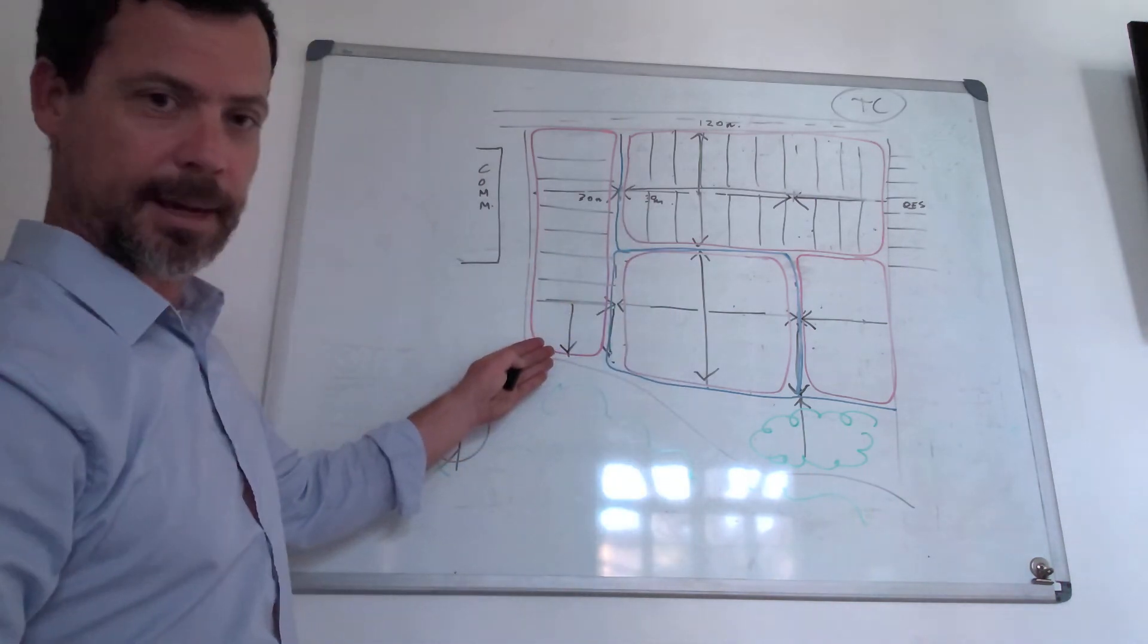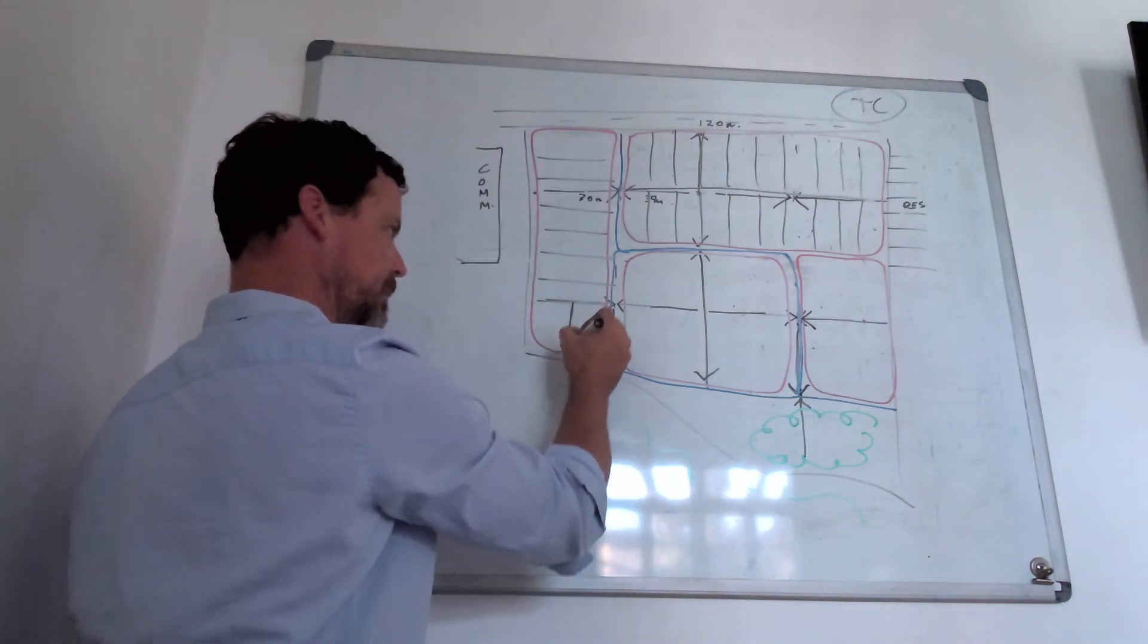You can see here where we make the arrow pointing down, we'll run these allotments in this direction.